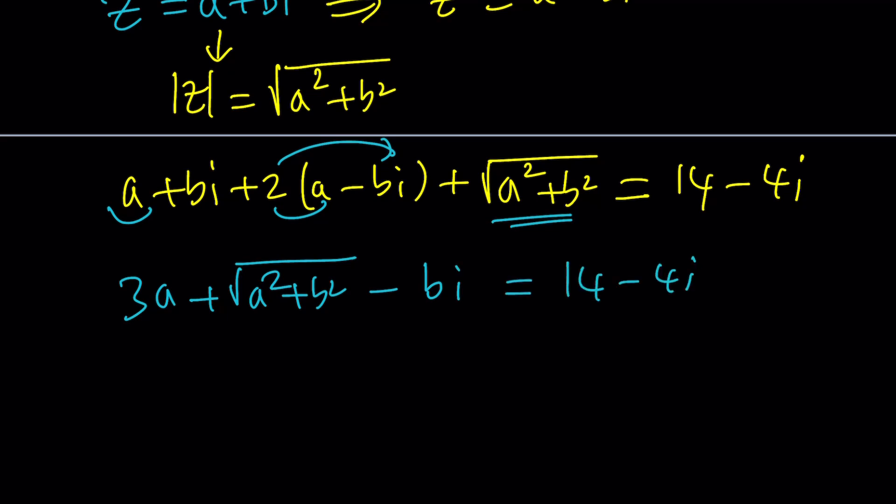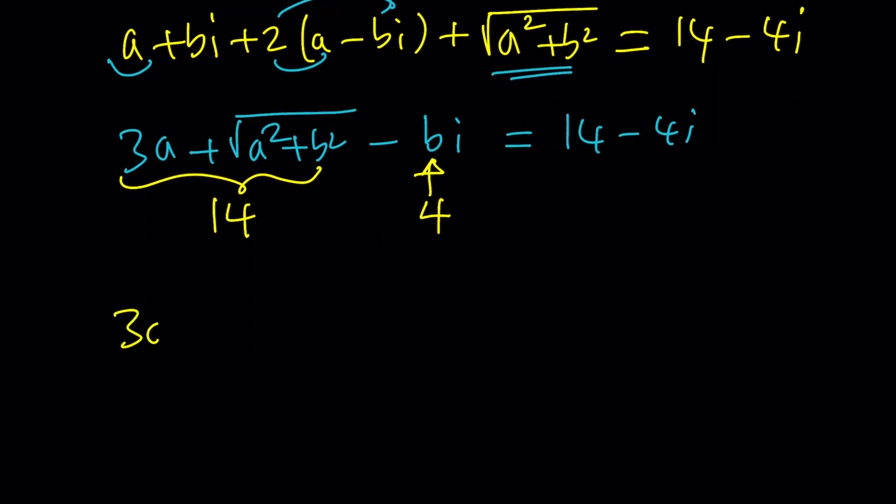That's going to give us a minus B I equals 14 minus 4 I. Now this part of the equation kind of looks a little scary, right? But don't worry, this is pretty good. So the imaginary part must be negative 4, which means B is equal to 4. So once you know what B is, the rest is sort of easy. This whole thing should be 14 and we know that B is equal to 4. So it's going to be like this. 3A plus the square root of A squared plus B squared, which is 16, equals 14. Awesome.